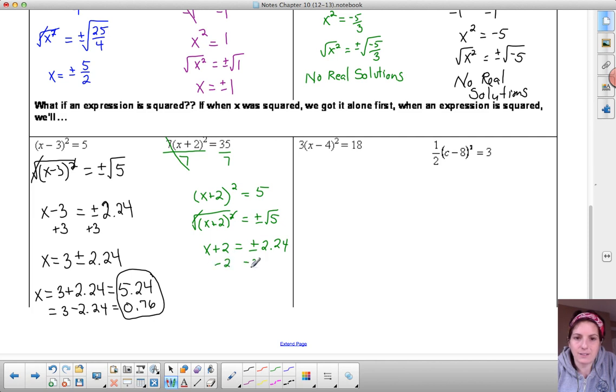We get that part being squared. We just did the square root of 5. And then our last step is to get x all by itself. X is equal to negative 2 plus or minus 2.24. So my two possible x values come from adding and subtracting. When I do the addition, I get 0.24. When I do the subtraction, I get negative 4.24, and those are my two solutions.